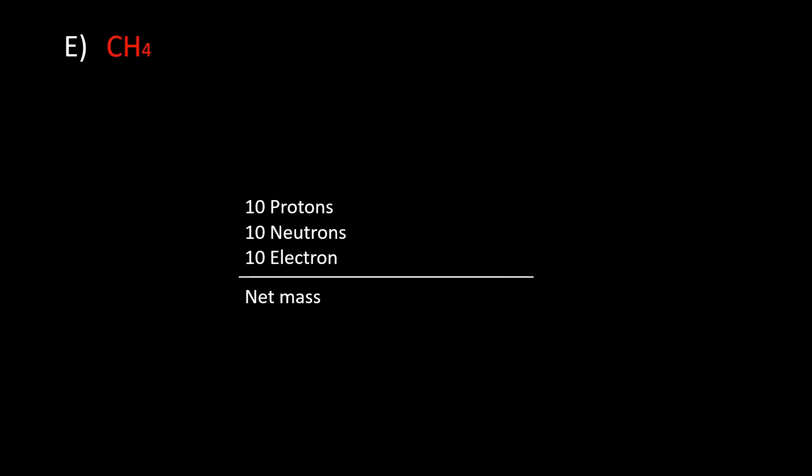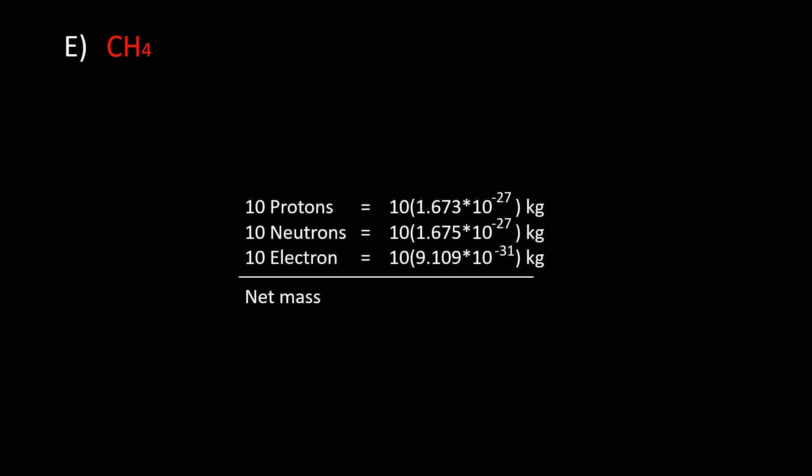For atom E, there are four atoms. Each carbon atom has six protons, six neutrons, and six electrons, while each hydrogen atom has one proton, one neutron, and one electron. By multiplying each particle's mass by the number of particles and then summing them, the total mass of the entire molecule is 3.349×10⁻²⁶ kg.